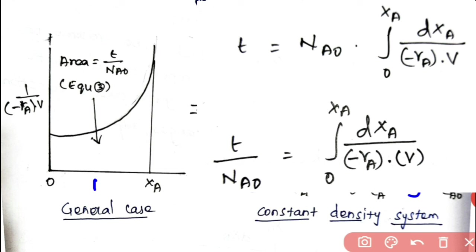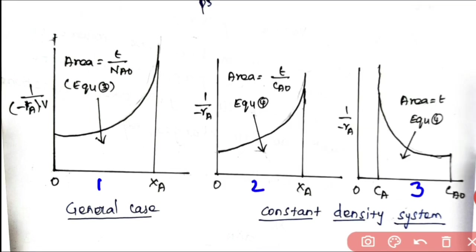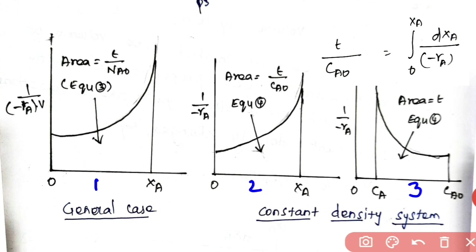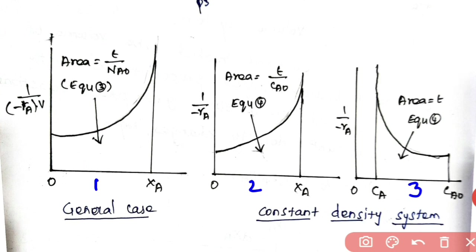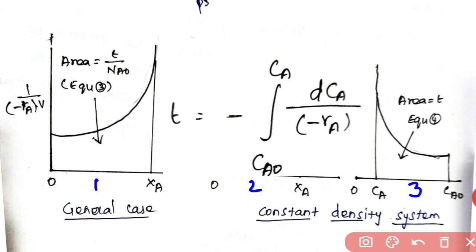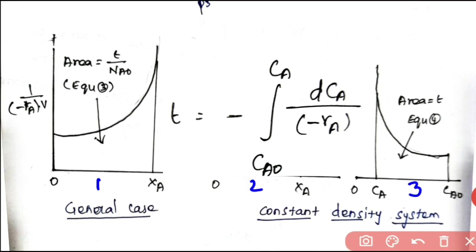From Graph 1 you can calculate the time required for a desired conversion. Graph 2 is for the constant density system in terms of conversion: X-axis is 0 to XA, Y-axis is 1/(−rA), and the area under the curve gives t/CA0. Graph 3 is in terms of concentration: X-axis is CA0 to CA, Y-axis is 1/(−rA), and the area under the curve gives directly the time t required for the conversion.